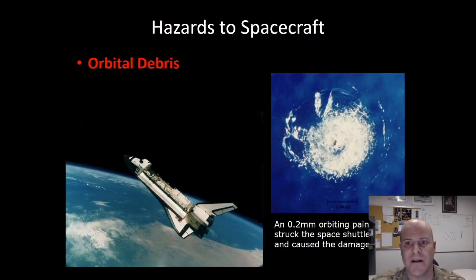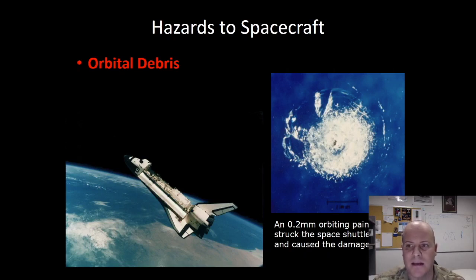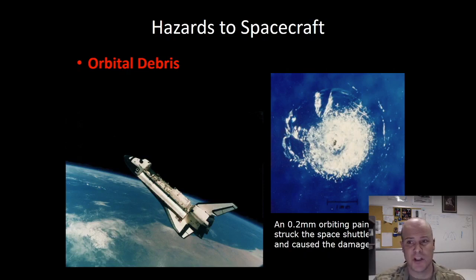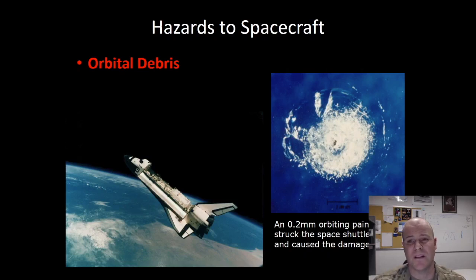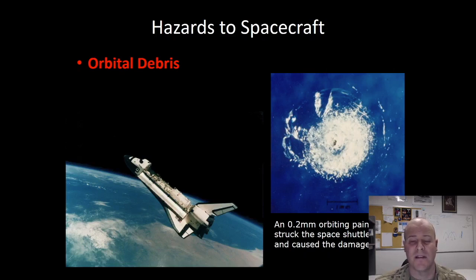Our last spacecraft hazard is that of orbital debris, or space junk. Micro meteoroids and orbital debris can damage a spacecraft during a high-speed impact. Even things very small, such as an orbiting paint chip, can cause significant damage. An orbiting paint chip struck the space shuttle in 1983, causing visible damage. The paint chip was only 0.2 millimeters in diameter but was traveling around 30,000 miles per hour, causing a 4-millimeter wide crater about 20 times its original size. You can imagine the damage from something even larger, like a baseball or softball — it could absolutely devastate your spacecraft.